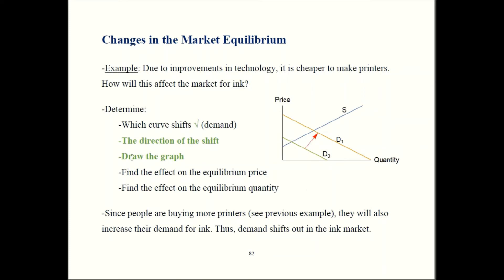Now we can draw a picture illustrating that. We start out on this old demand curve, and here is supply. When demand shifts out, we have the new demand curve D1 out over here. Our picture can then tell us what's happening to price and quantity. Old equilibrium is back here — that's where old demand meets supply. The price is going to be this high. Our new equilibrium is going to be out here, meaning our price is going to be at this level — that looks higher, so price is going to go up.